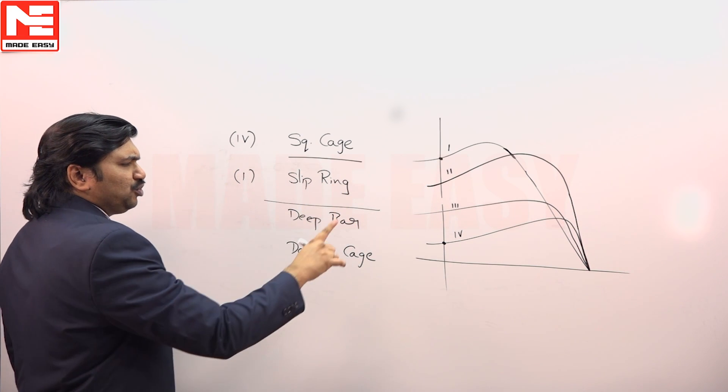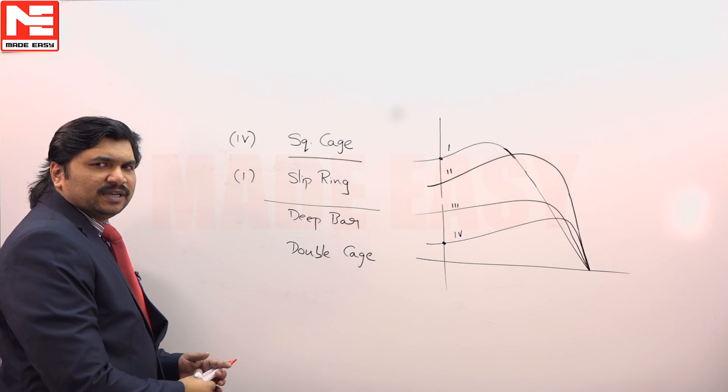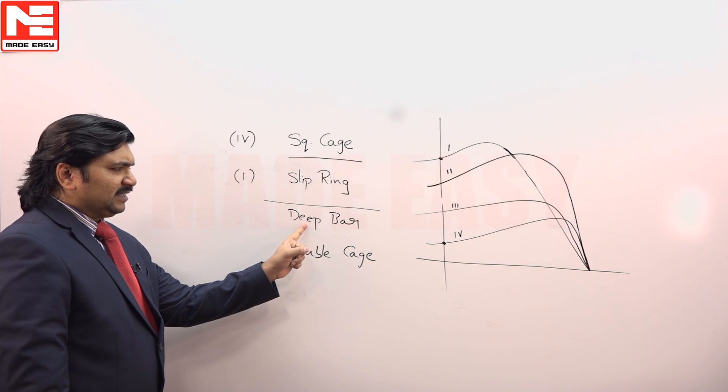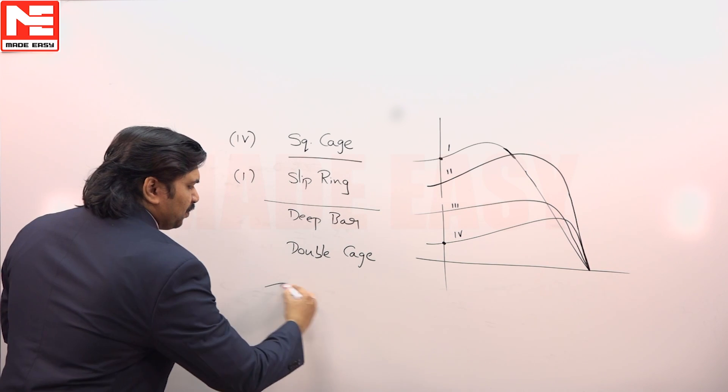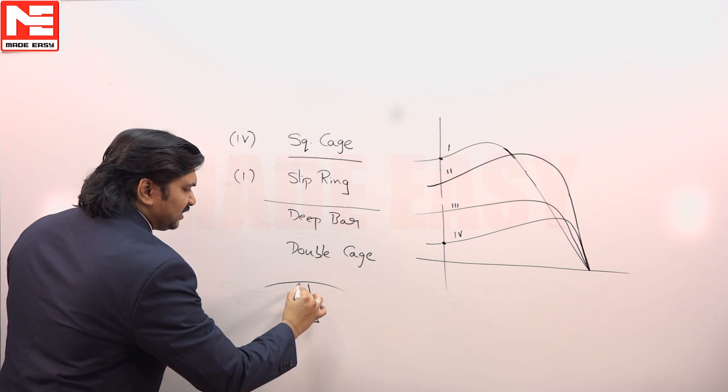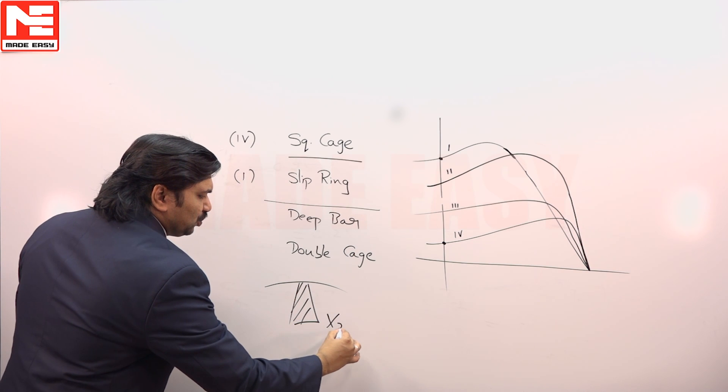In between these two, one should be deep bar, other one should be double cage. Deep bar as the name implies, the bar is so deep, it has high X2. Because the bar is so deep inside, it has X2 is very high.